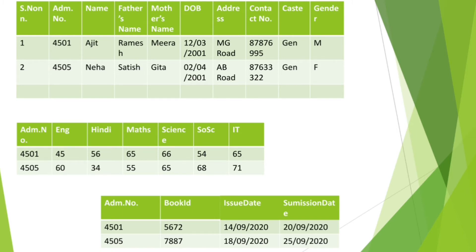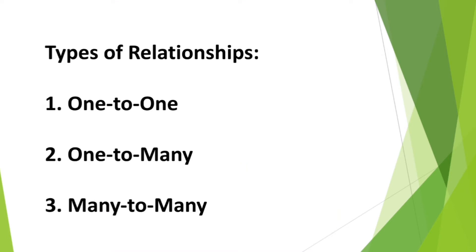In the database, there can be three types of relationships. The first is one-to-one, second one-to-many, and third many-to-many.